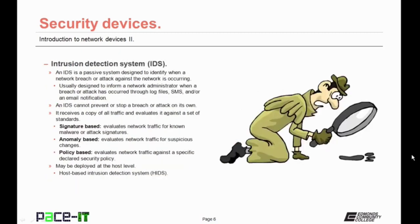Then there is the intrusion detection system, the IDS. An IDS is a passive system designed to identify when a network breach or attack against the network is occurring. They're usually designed to inform a network administrator when a breach or attack has occurred, through log files, text messages, and/or email notifications. An IDS cannot prevent or stop a breach or attack on its own. The IDS receives a copy of all traffic and evaluates it against a set of standards. The standards it uses may be signature-based — evaluating network traffic for known malware or attack signatures — or anomaly-based.